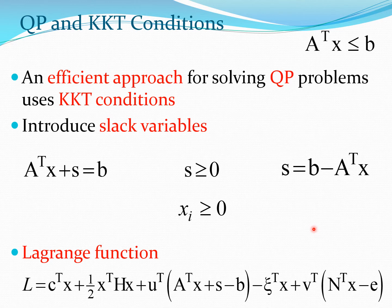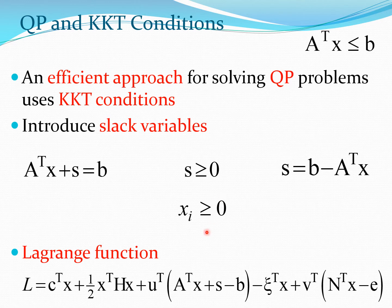One way to solve the QP problem is by using the KKT conditions, and we will show that we use the simplex method to solve this QP problem. Recall that the constraint equation A-transpose X is less than B can be converted to an equality constraint by adding a slack variable s, where all s values are greater than or equal to zero. There is also a constraint that xi must be greater than or equal to zero, which is equivalent to negative xi being less than or equal to zero, and we treat that as a constraint as well.